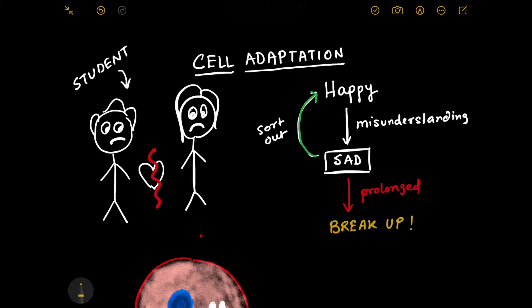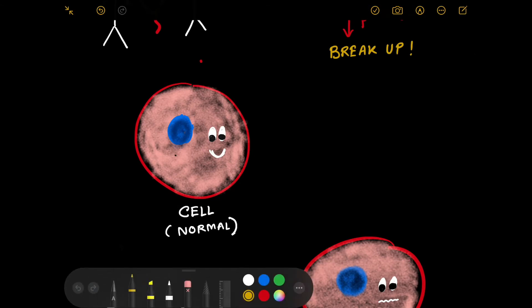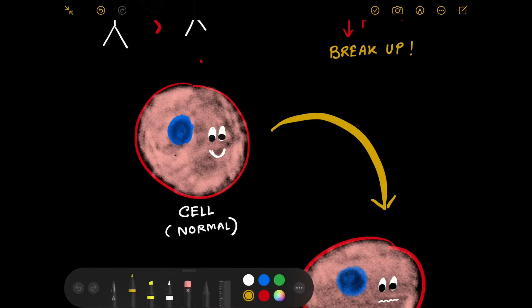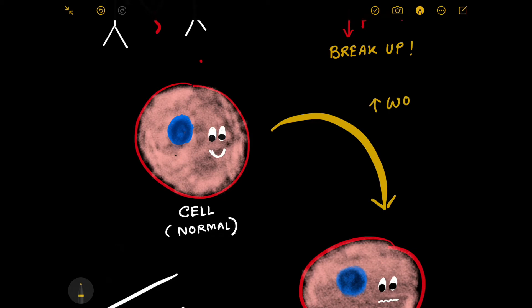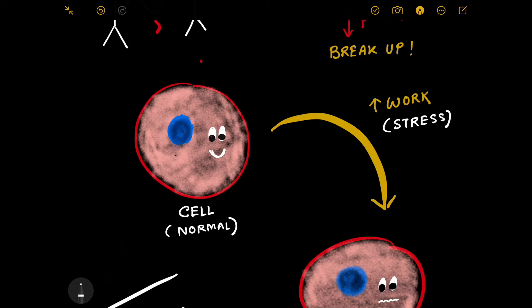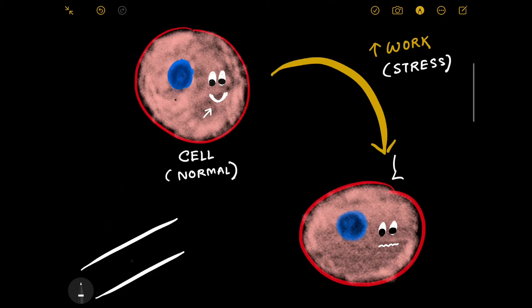This simple idea can be applied to understanding cell adaptations. We have a normal cell. Due to some reason, this cell gets some stress. Almost all cells in our body are allotted some kind of work. Suppose the work allotted to this cell gets doubled — it receives increased workload, and that works as a stress in the life of this cell. Until then the cell was happy and normal, but as the workload increased the cell became sad and started thinking about how to cope.